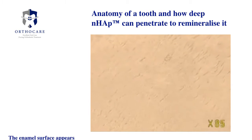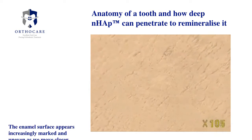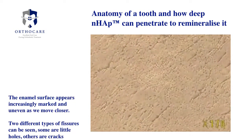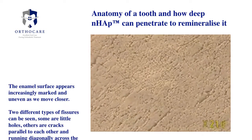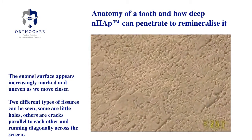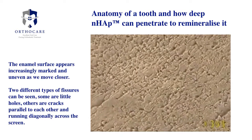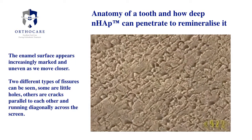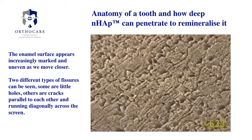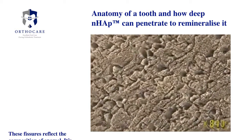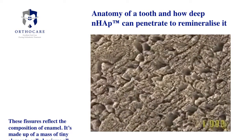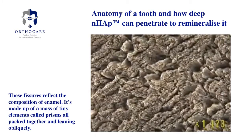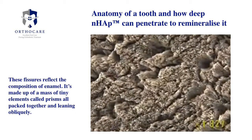The enamel surface appears increasingly marked and uneven as we move closer. Two different types of fissures can be seen: some are little holes, others are cracks parallel to each other and running diagonally across the screen. These fissures reflect the composition of enamel — it's made up of a mass of tiny elements called prisms, all packed together and leaning obliquely.